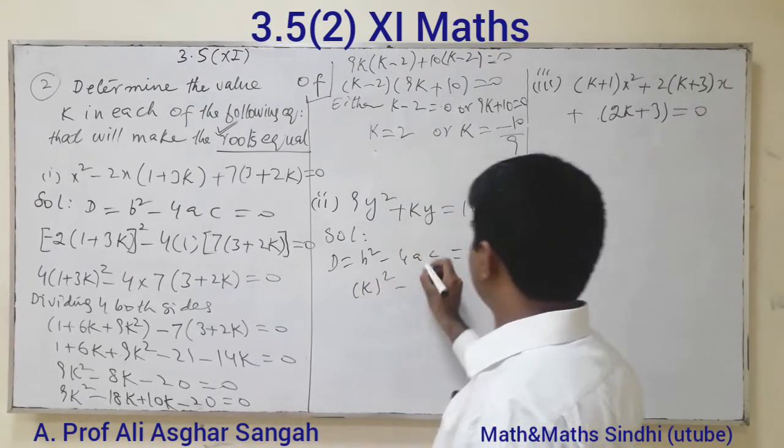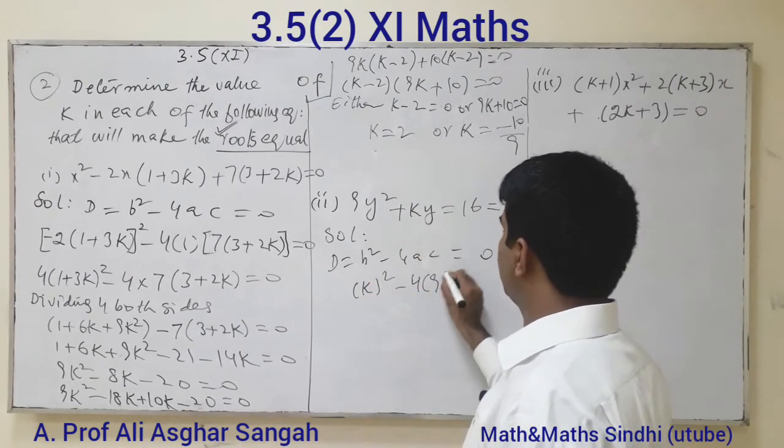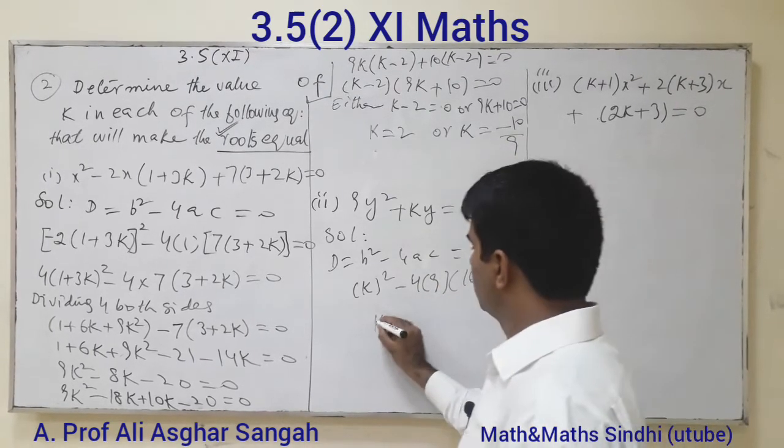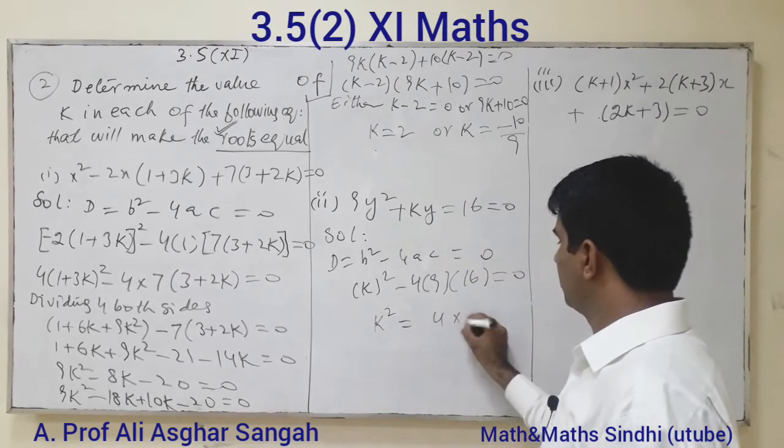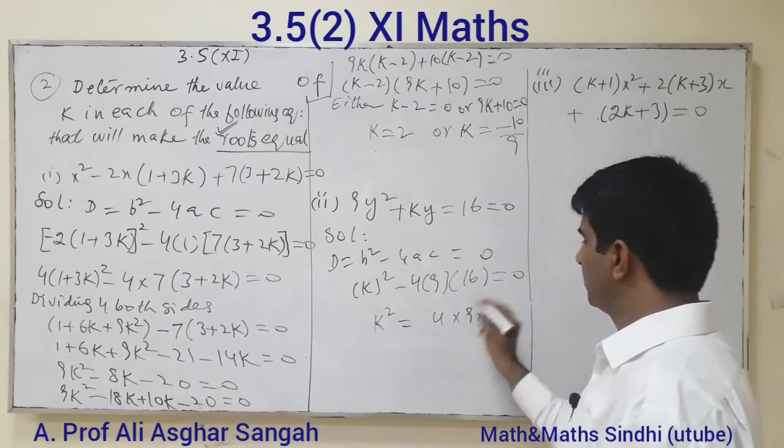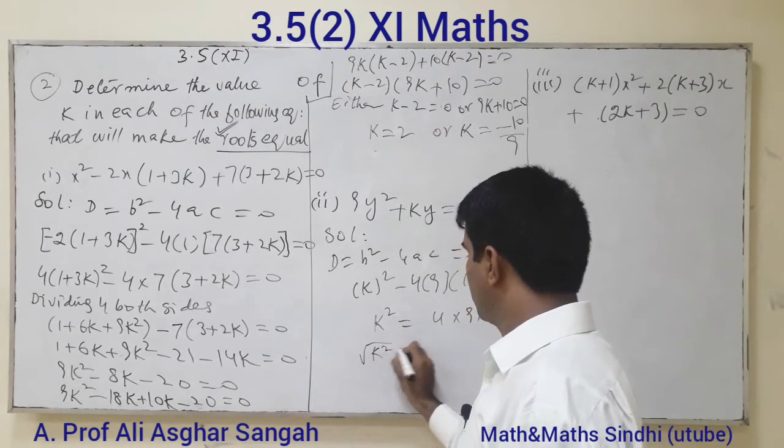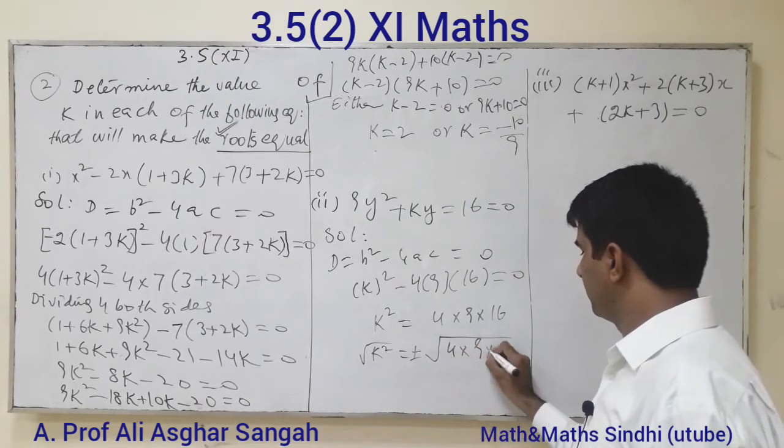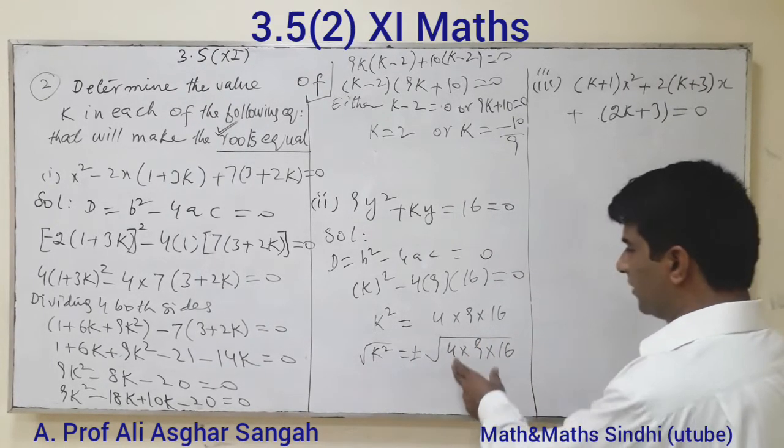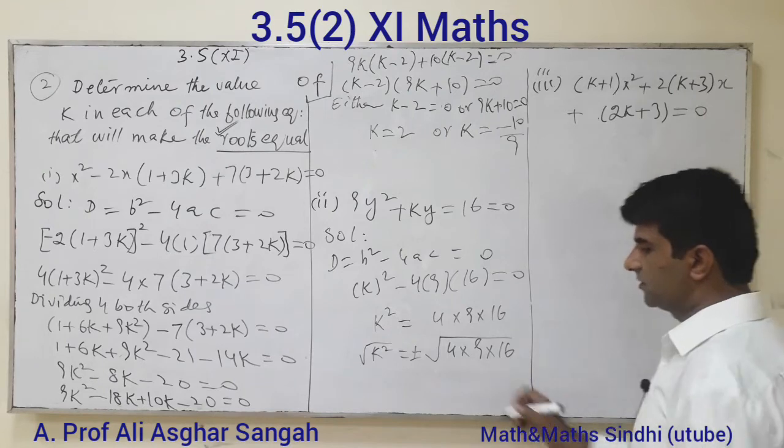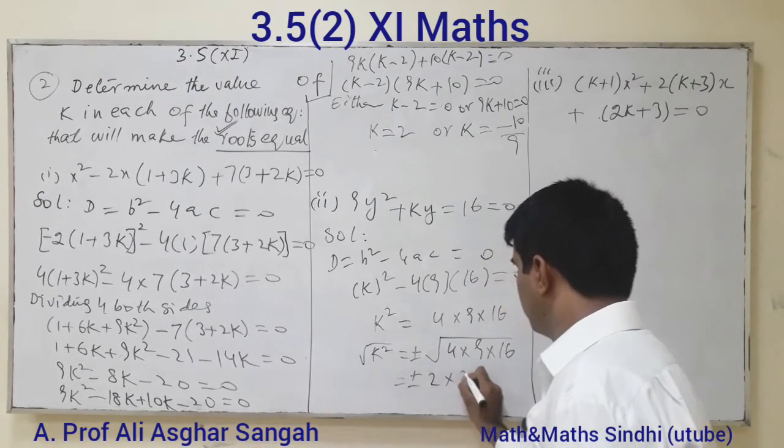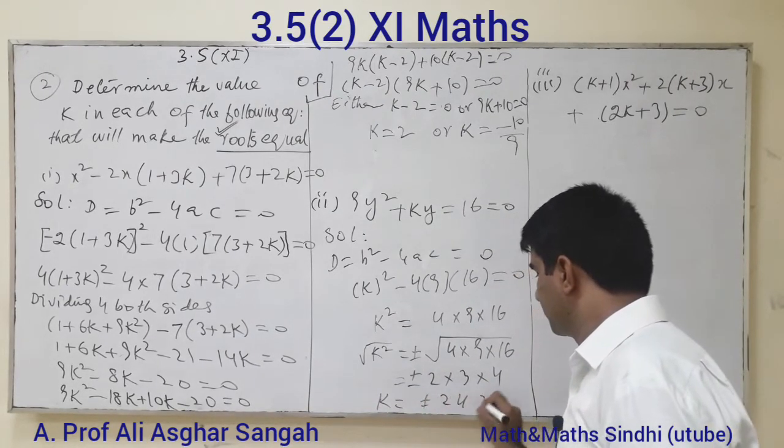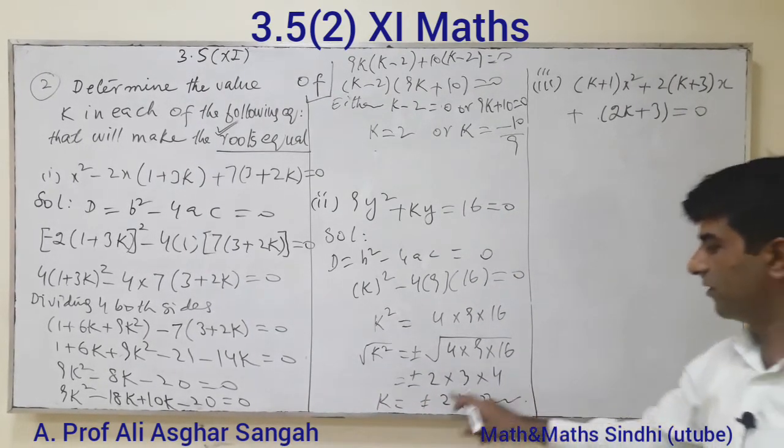Next problem: K squared minus 4 times 9 times 16 equals zero. K squared equals 4 times 9 times 16. Taking square root on both sides: K equals plus or minus square root of 4 times 9 times 16, which equals plus or minus 2 times 3 times 4. Therefore K equals plus or minus 24.